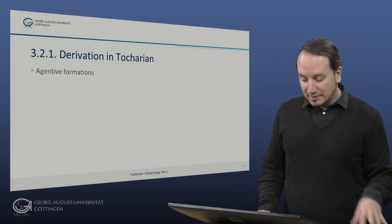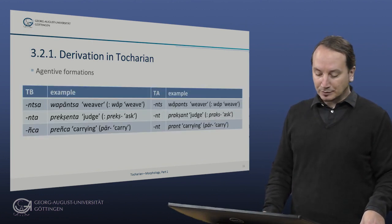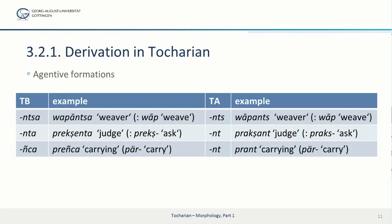On the next slides we find productive agentive formations. We have the -nza formations, for example 'vapantza' meaning weaver, from the root 'vap', with a nice equivalent in Tocharian A. Also 'prekshenta' meaning judge, from the present stem 'preksh' meaning to ask, with its exact Tocharian A equivalent. And the -nza form 'preksha' meaning carrier, from the root 'pyr' meaning to carry — and 'prant' in Tocharian A, also meaning carrier. These are very productive formations of the NT-participle, i.e., present participles.